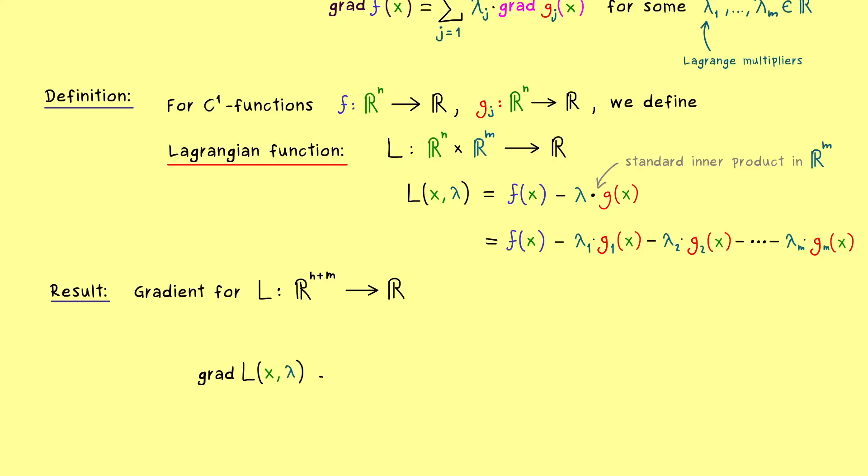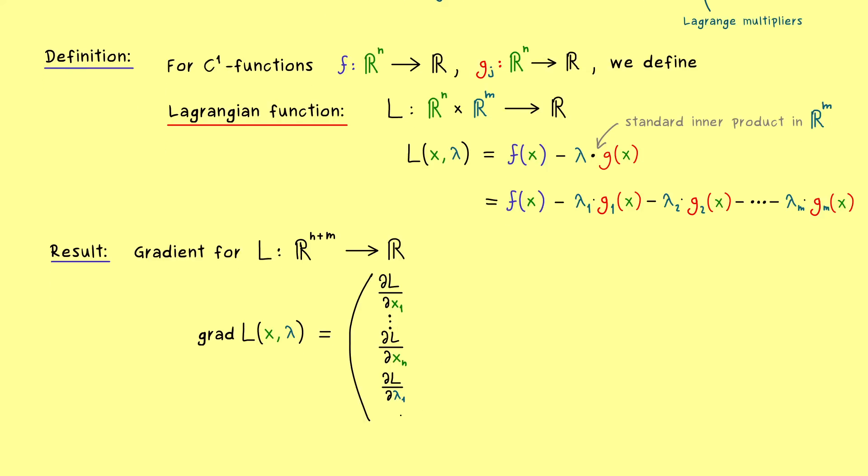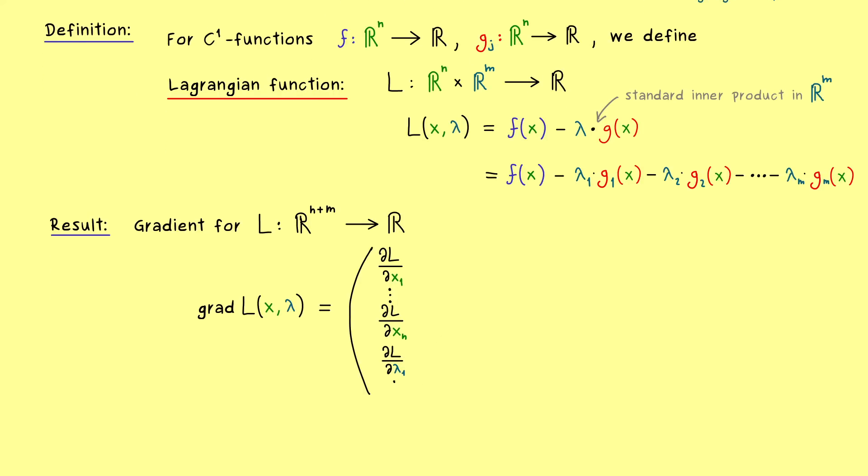Hence in the next step we can just formulate this vector. The first component would be dL with respect to x1. And this continues until we have dL with respect to xn. And then we would start with the lambda coefficients. So we have dL with respect to lambda 1. And obviously also this continues until we have lambda m. And that's it. This is the whole thing we want to have.